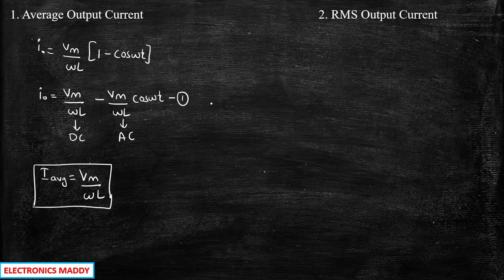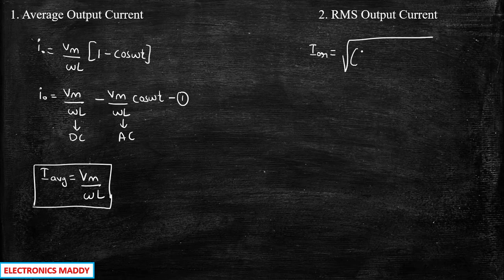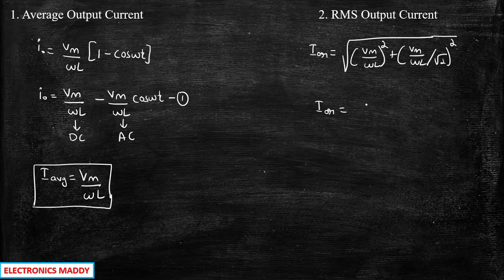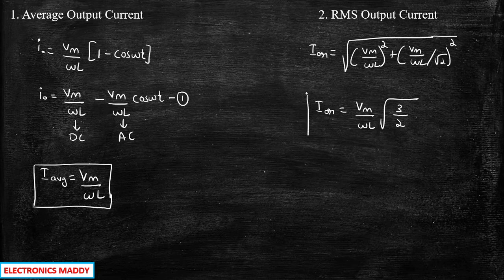For the RMS value of output current, we take the square root of the sum of squares of the DC and AC magnitudes: I_RMS = √[(Vm/ωL)² + (Vm/ωL / √2)²]. Substituting and simplifying, I_out_RMS = (Vm/ωL)·√(3/2). This is the expression for the RMS value of output current.